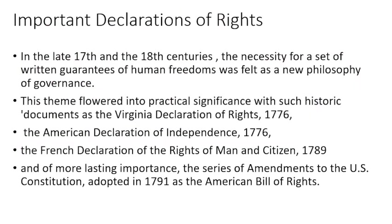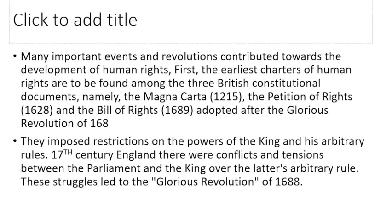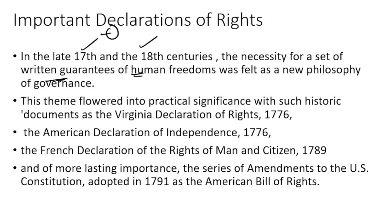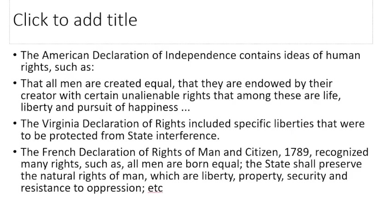In the late 17th and 18th centuries, people felt they needed written guarantees of human freedom. Accordingly, some historical documents came into play: the Virginia Declaration of Rights, the American Declaration of Independence, the French Declaration of Rights of Man and Citizen, and the American Bill of Rights.